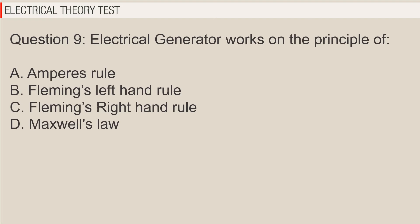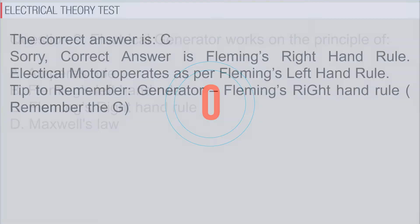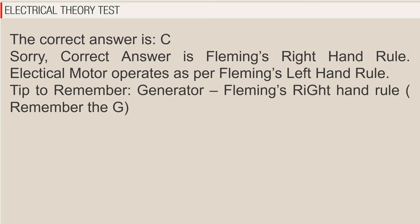Question 9: Electrical generator works on the principle of A. Ampere's rule, B. Fleming's left-hand rule, C. Fleming's right-hand rule, D. Maxwell's law. The correct answer is C. Electrical motor operates as per Fleming's left-hand rule. Tip to remember: generator, Fleming's right-hand rule. Remember the G.